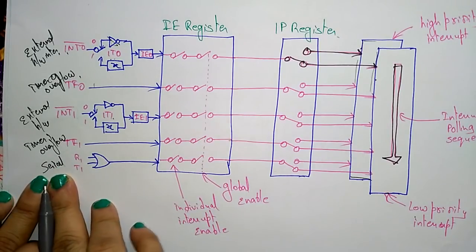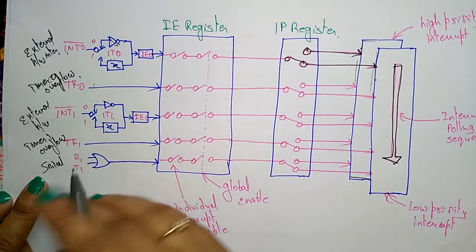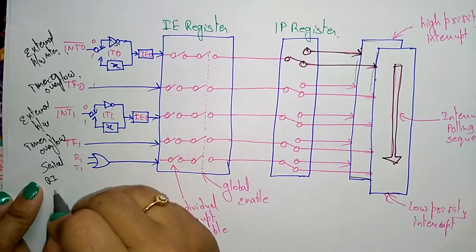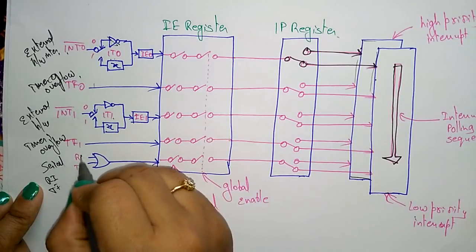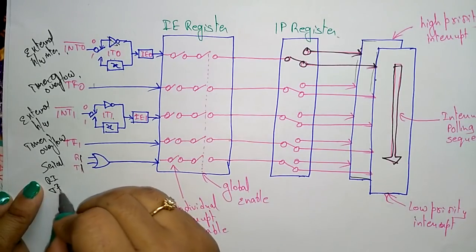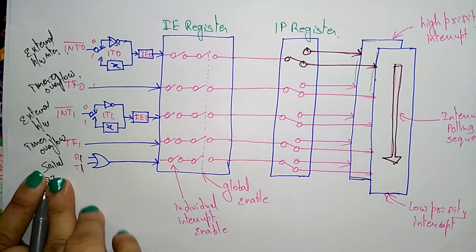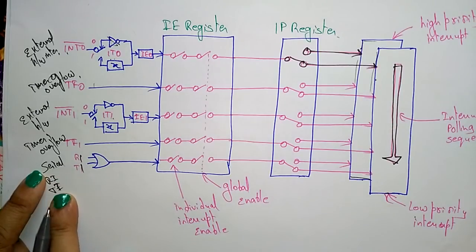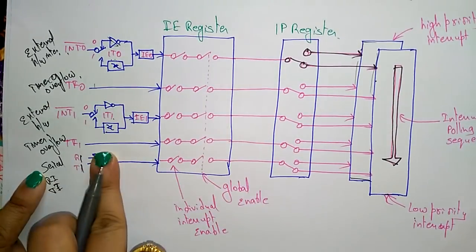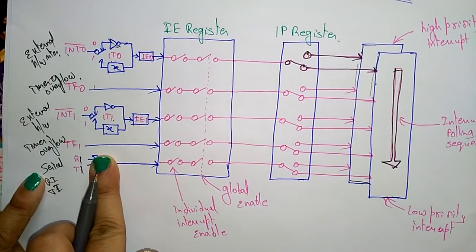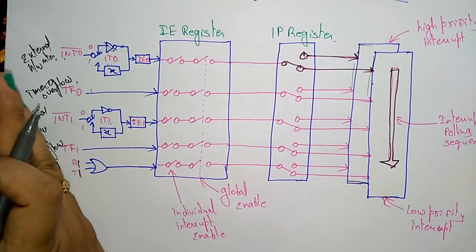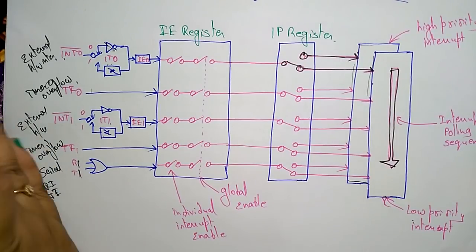This is the serial communication interrupt. These are the different types of interrupts received from external devices and external sources.